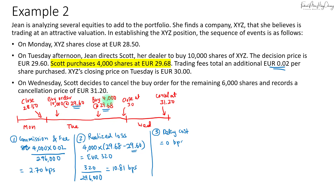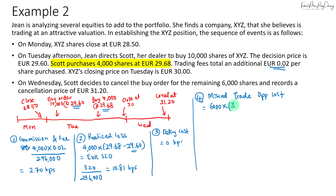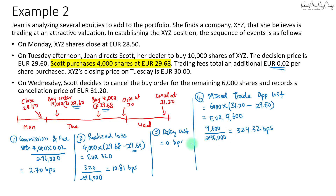Calculating the missed trade opportunity cost: the remaining 6,000 shares that were not purchased are multiplied by the cancellation closing price of 31.20 minus the original decision price of 29.60. That represents the gain missed on those 6,000 shares, totaling 9,600 euros. In basis points, 9,600 divided by 296,000 equals 324.32 basis points.